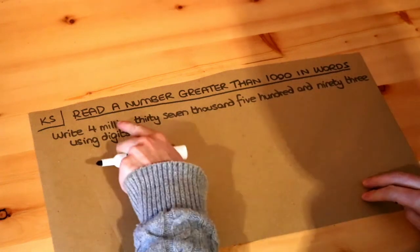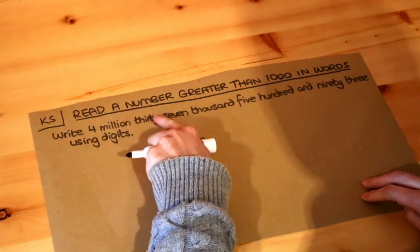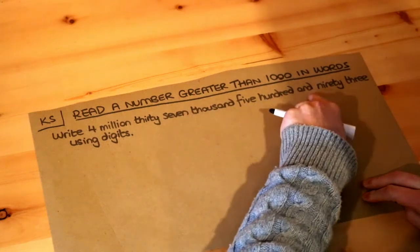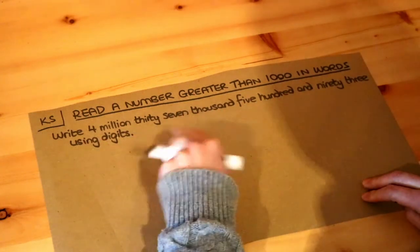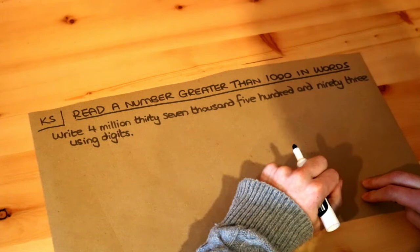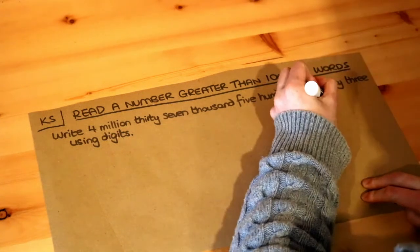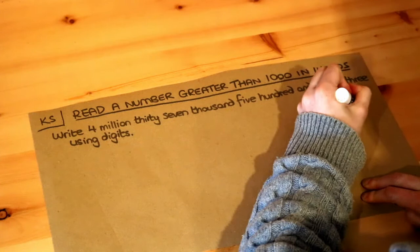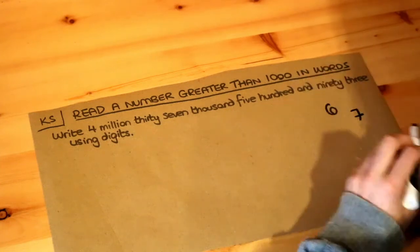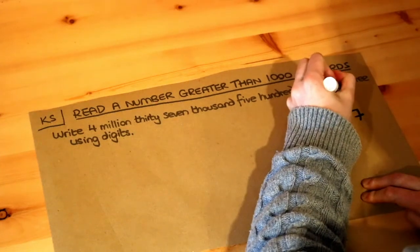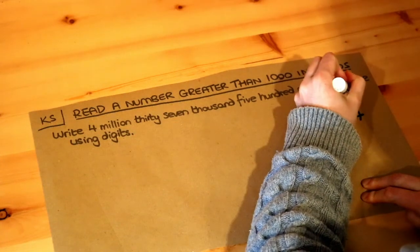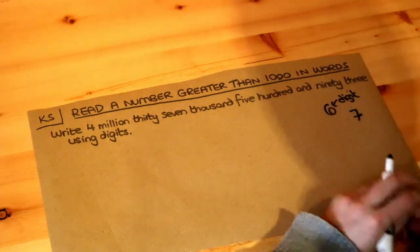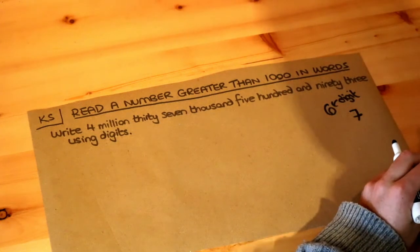So we want to write this number 4,037,593 using digits. Remember what a digit is — a digit is just a single character which is a number, so that's just a single digit. The seven is a single digit, and we can put digits together to form a larger number.